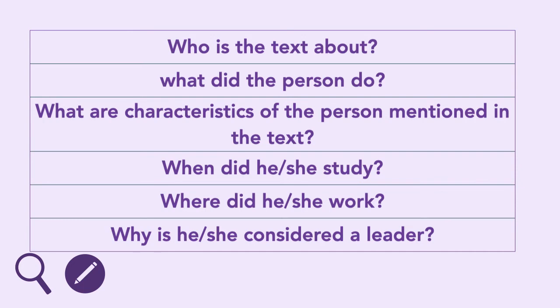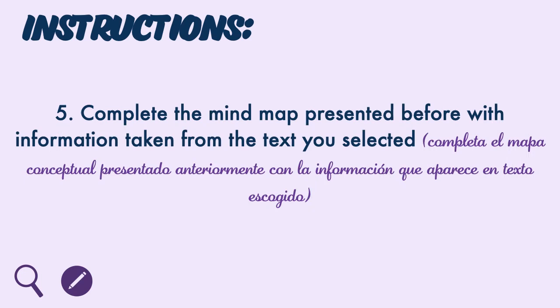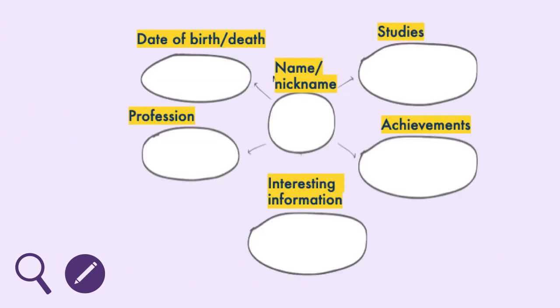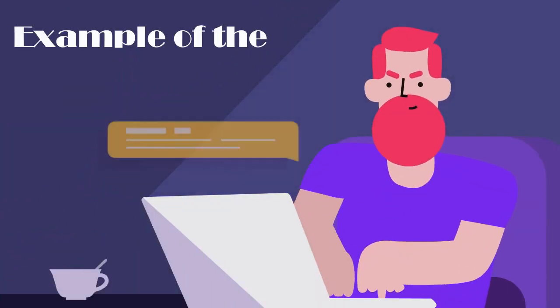Where did he or she work? And why is he or she considered a leader? Instruction number five: complete the mind map with information taken from the text you selected. Now it's time to see the modeling of the challenge.